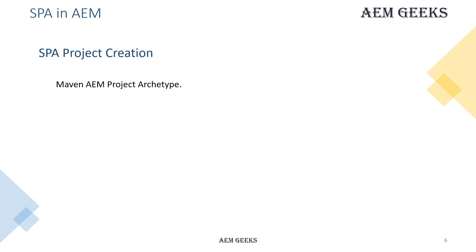To create a project, you will use the same Maven archetype you use for creating a normal AEM project. You will pass some specific parameters to create a SPA project, and you can create for both React and Angular. This was the basic conceptual tutorial for understanding SPA implementation in AEM. In coming tutorials we'll see it in detail using a demo project or by creating our own SPA project. If you have any questions, please do comment. Thank you.